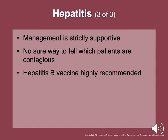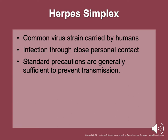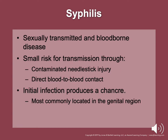Herpes is a common virus strain carried by humans — more than 85% of people carrying the virus are asymptomatic. Symptomatic infections cause eruptions of tiny fluid-filled blisters called vesicles that often appear on the lips or genitals. Herpes simplex can cause serious illnesses like pneumonia and meningitis in the very young, very old, and immunocompromised patients. The primary mode of infection is through close personal contact. Syphilis, although commonly thought of as a sexually transmitted disease, is also a blood-borne disease — there is a small risk of transmission through contaminated needle-stick injuries and direct blood-to-blood contact. The initial infection produces a lesion called a chancre, commonly located in the genital region.